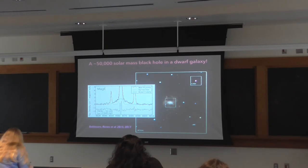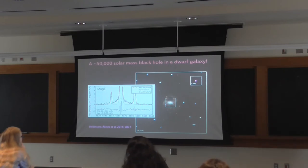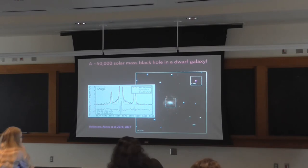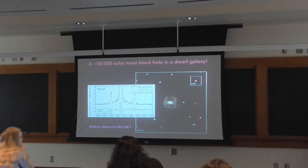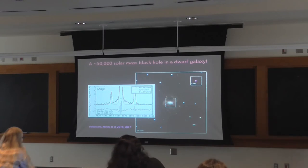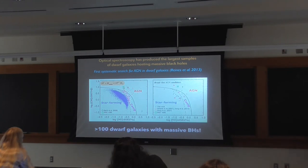From this SDSS sample we also found one of the smallest central black holes known, with a mass estimate of just 50,000 solar masses. This galaxy was originally classified as a composite in my Sloan sample, but I didn't have a black hole mass estimate because the broad H-alpha fell below the detection limit. We went back with Magellan and got better spectroscopy, finding a clear detection of a tiny broad H-alpha component giving a black hole mass of 50,000 solar masses — at the time, the record holder for least massive black hole in a galaxy nucleus.